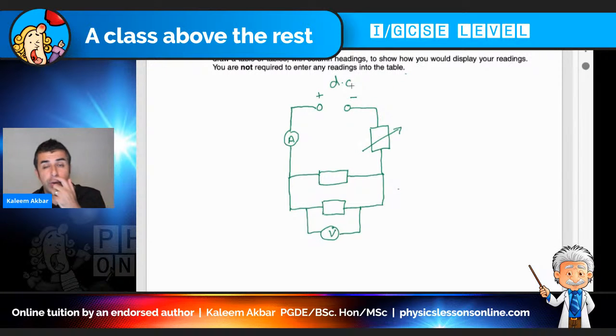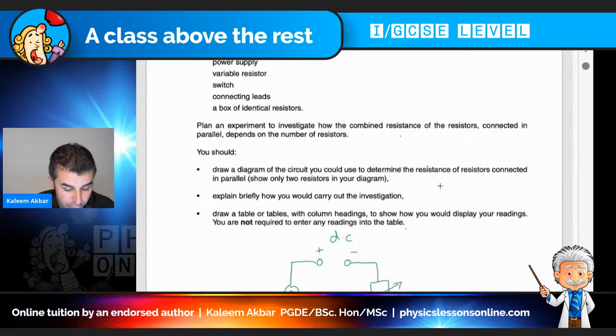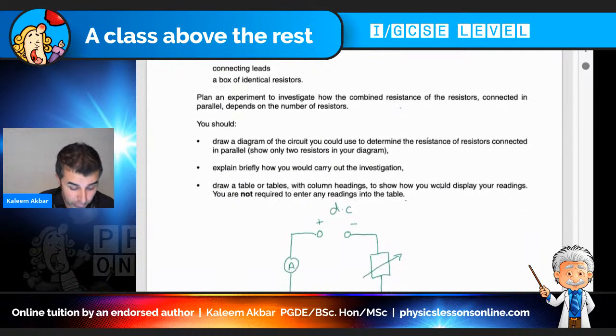Now, what should you know here? First of all, we should know that the voltage in the parallel part of this circuit is going to be the same across each resistor, that the ammeter is measuring the current in the entire circuit, and the variable resistor is there to control the current. We've got a DC power supply, meaning if we look at conventional current, current goes from positive to negative. So if we look at the first bullet point, draw a diagram of the circuit you could use to determine the resistance of the resistors connected in parallel. So I've done that.